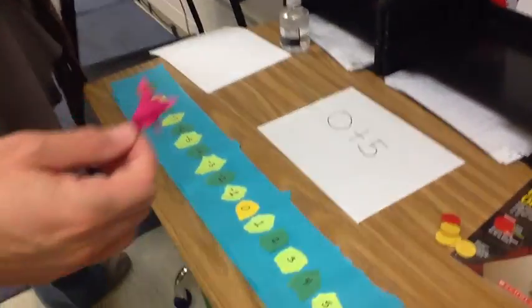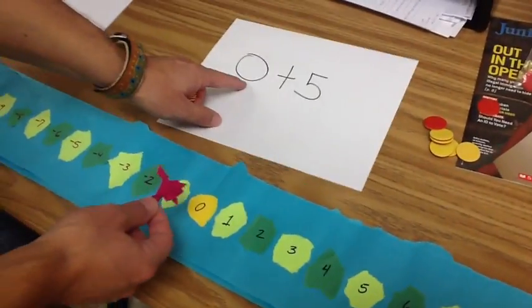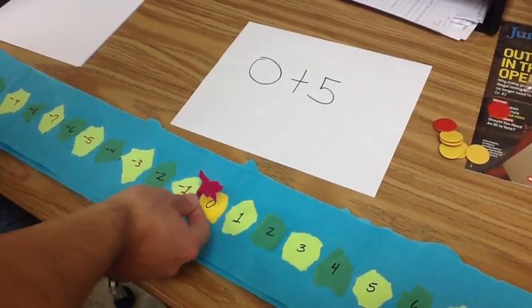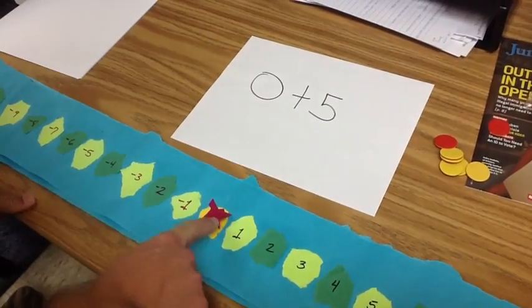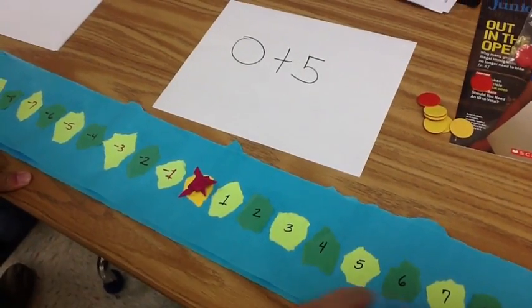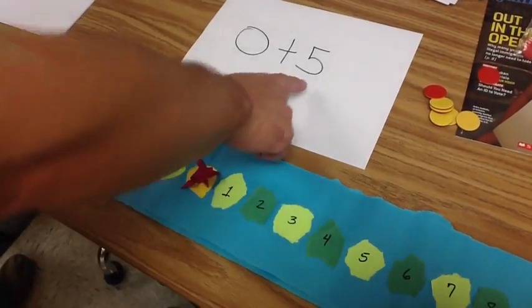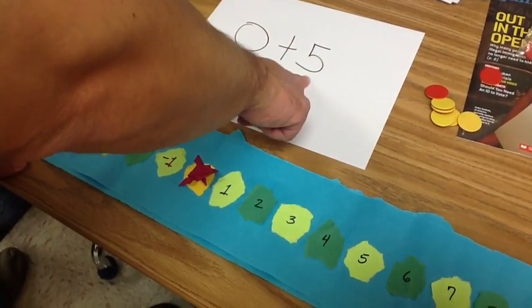So let's start off with something very simple. Let's do zero plus five. The first number tells us where the frog starts, so it starts at zero. The plus says it's a happy frog, so it faces towards the positive end of our number line.